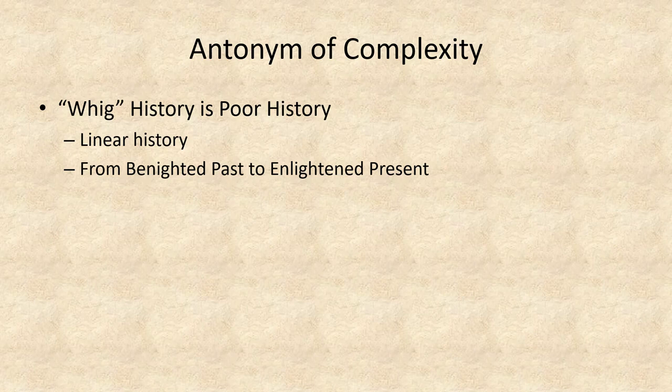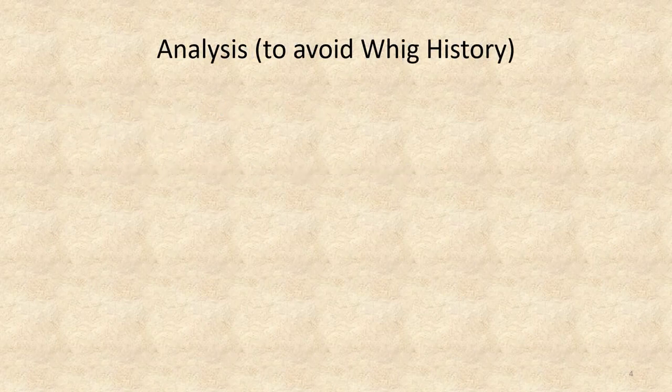Furthermore, Butterfield believed Whiggish historians committed two cardinal errors. They cherry-picked data while refusing to incorporate data that contradicted their point, and they tried to make the past reflect what we believe to be true of ourselves. Avoiding Whig history depended on employing solid and rigorous historical methods, which we do through analysis.